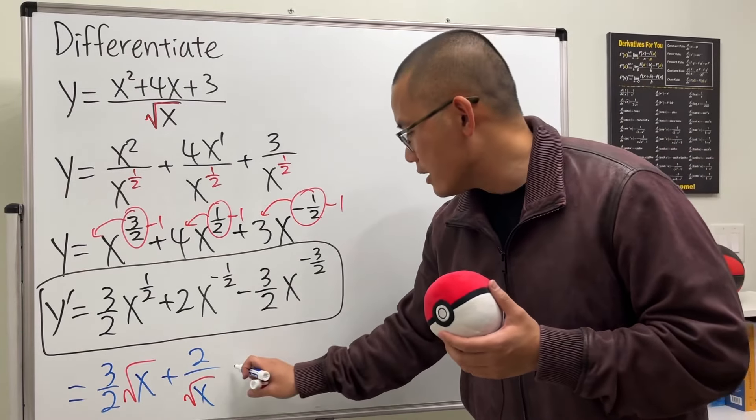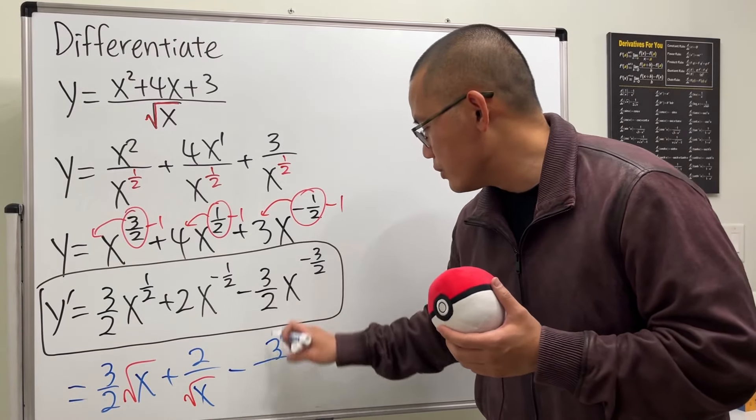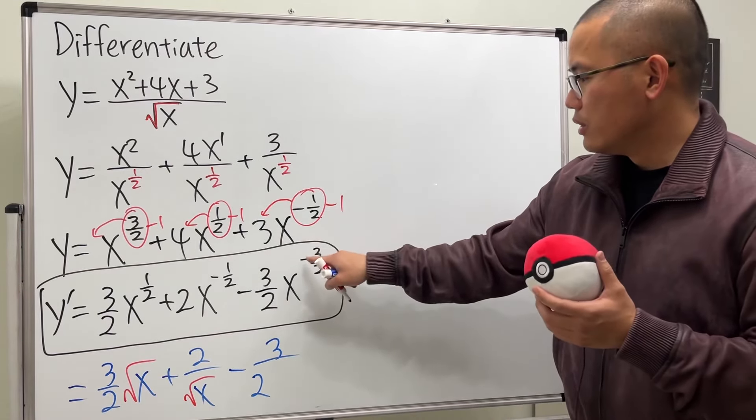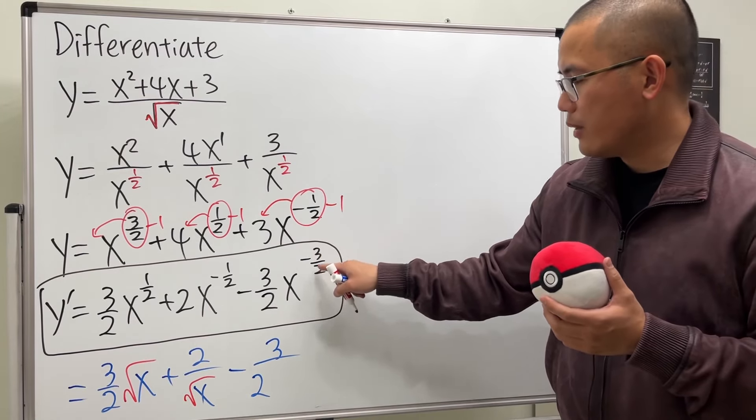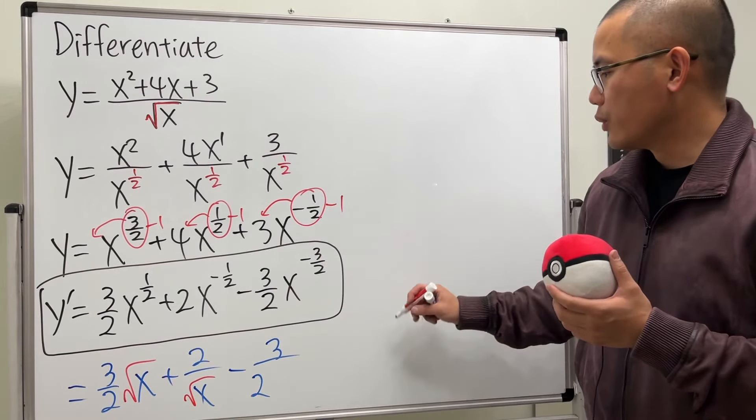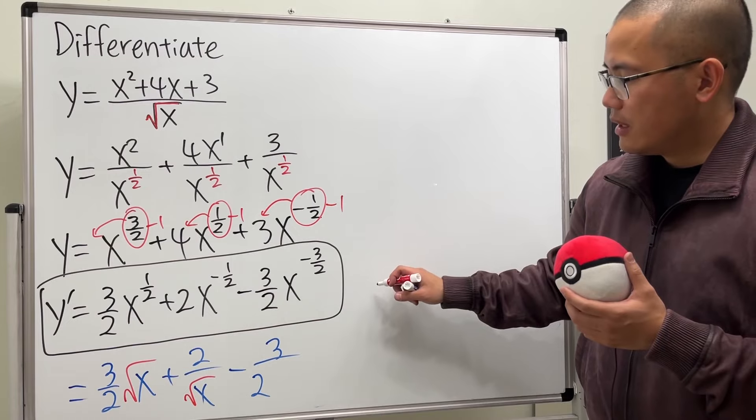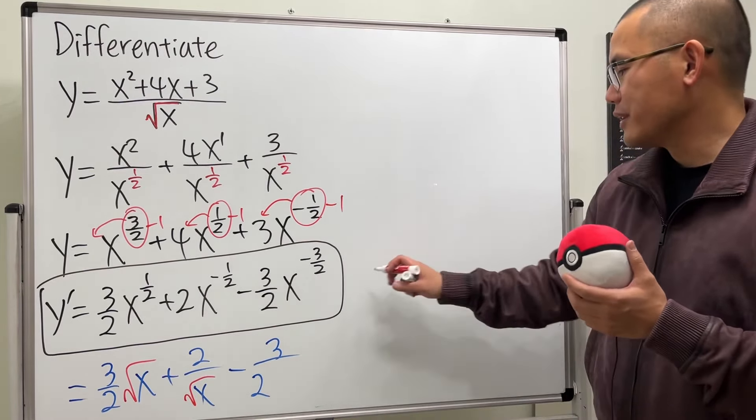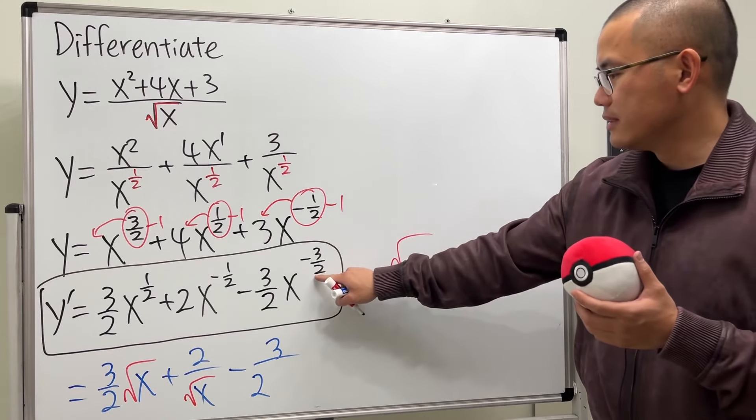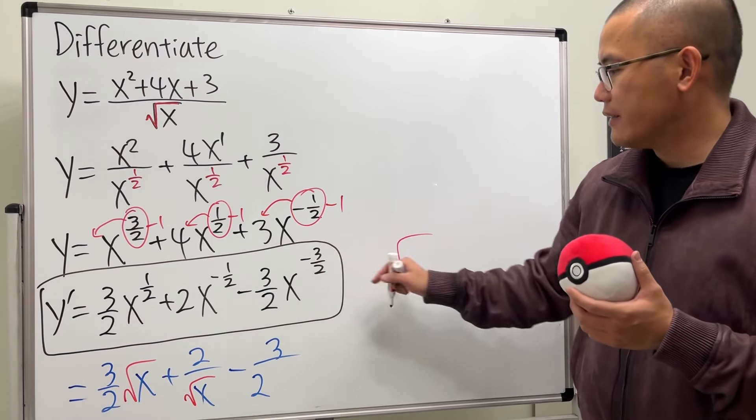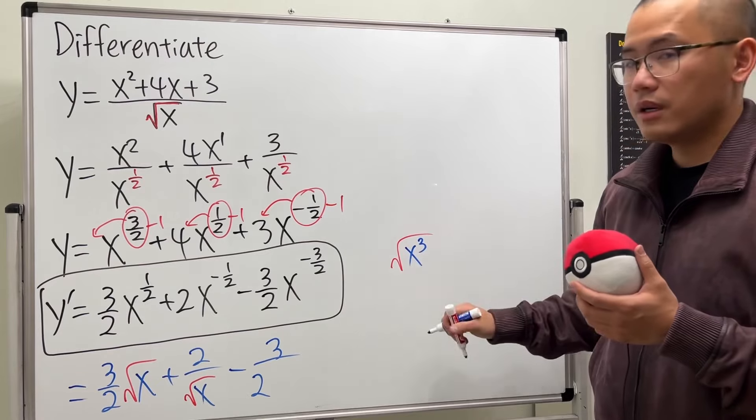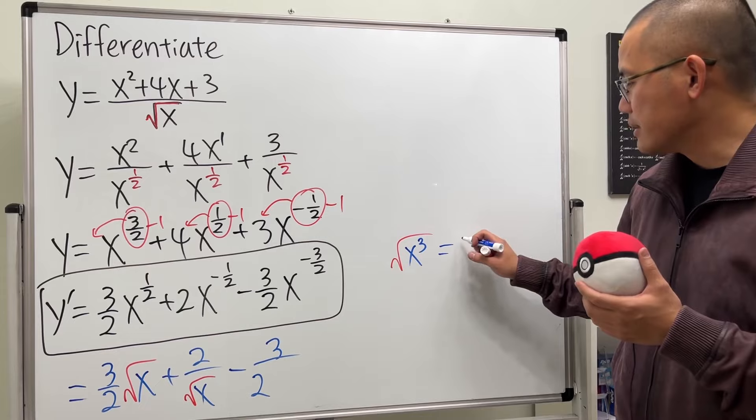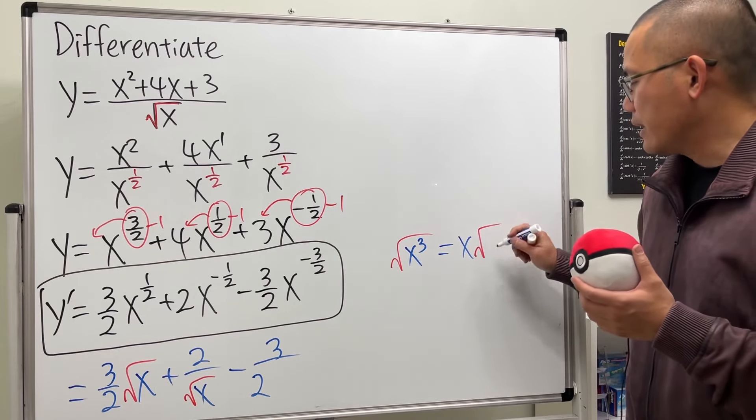Lastly, we have the minus 3 over 2. And then this is x to the negative 3 over 2 power. And we bring that down on the bottom. So we are going to get the square root of x to the third power. But for this, we can simplify it. And we can take out an x. So this is the same as x square root of x.